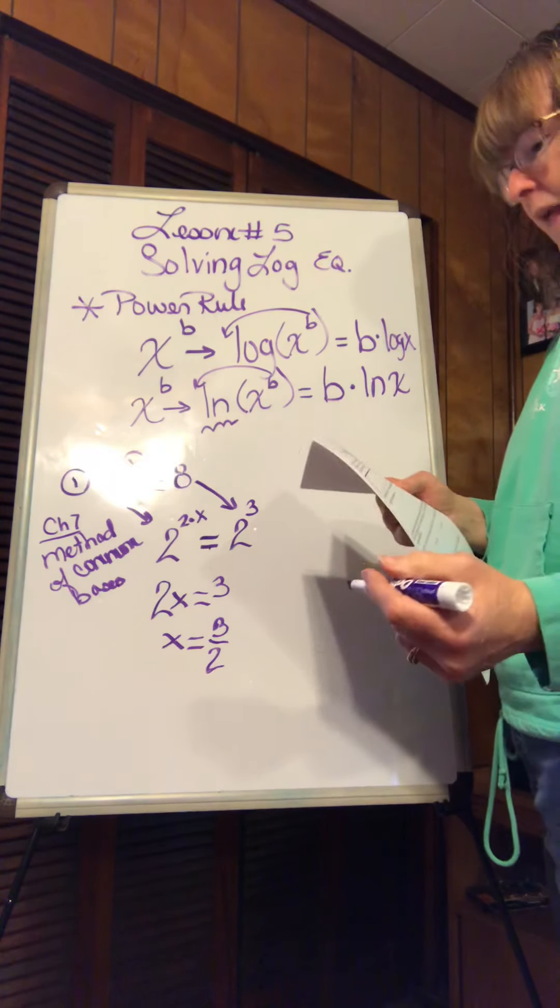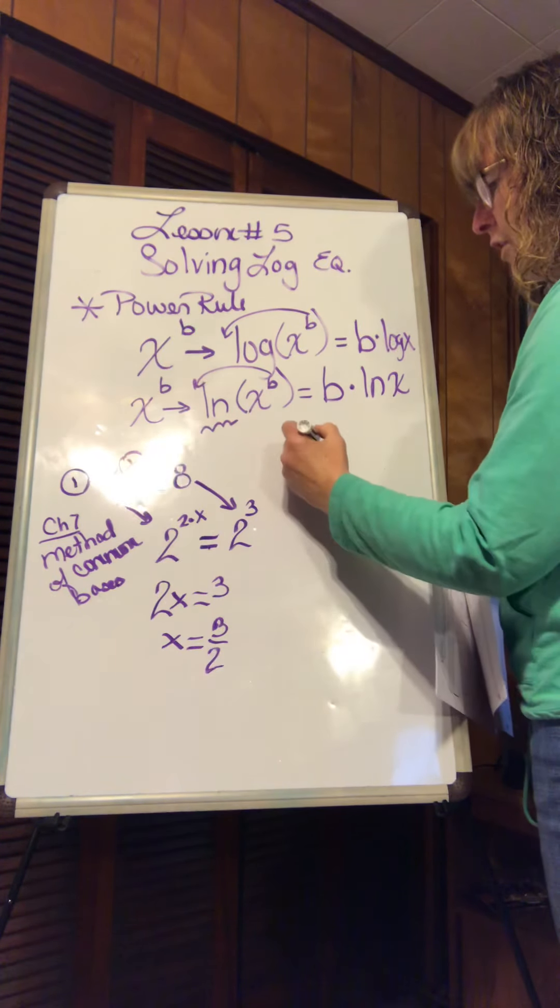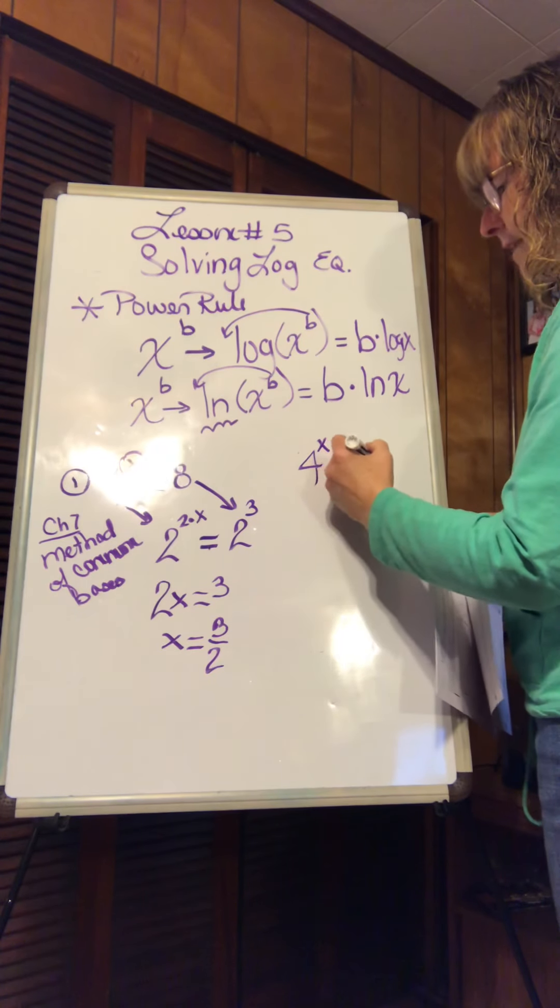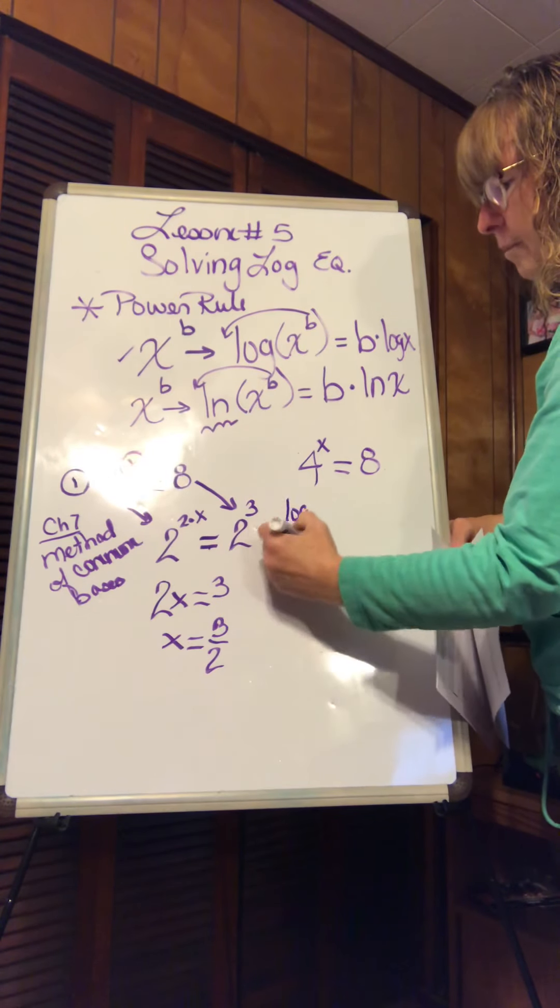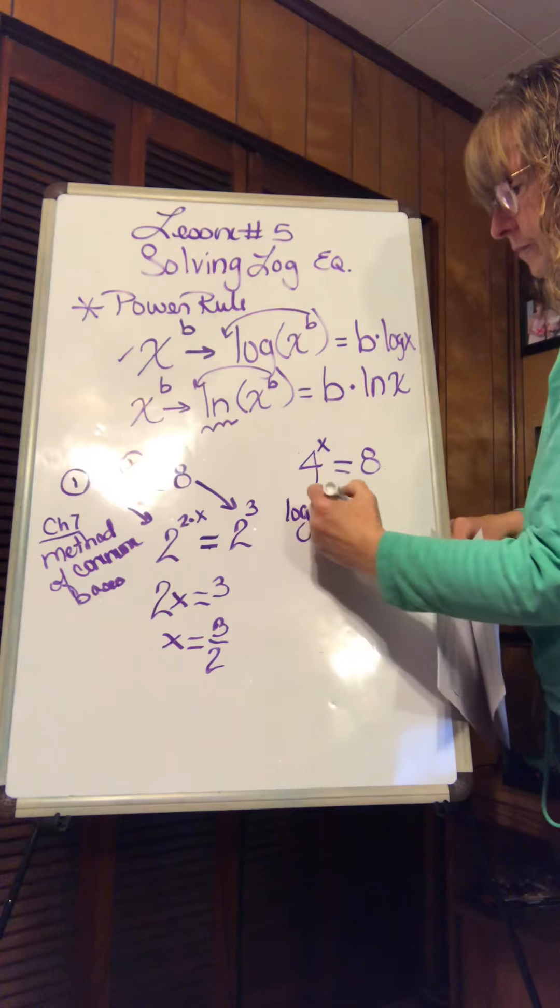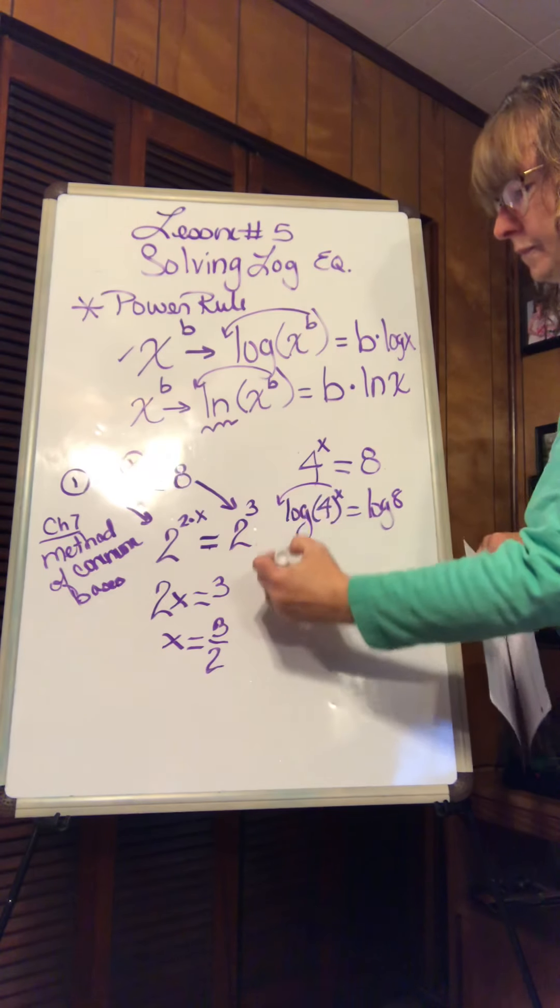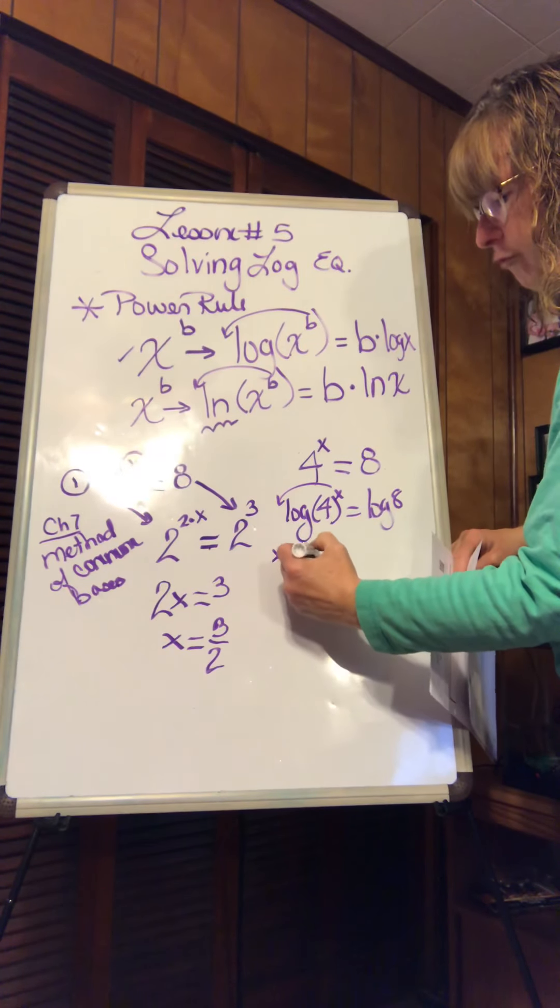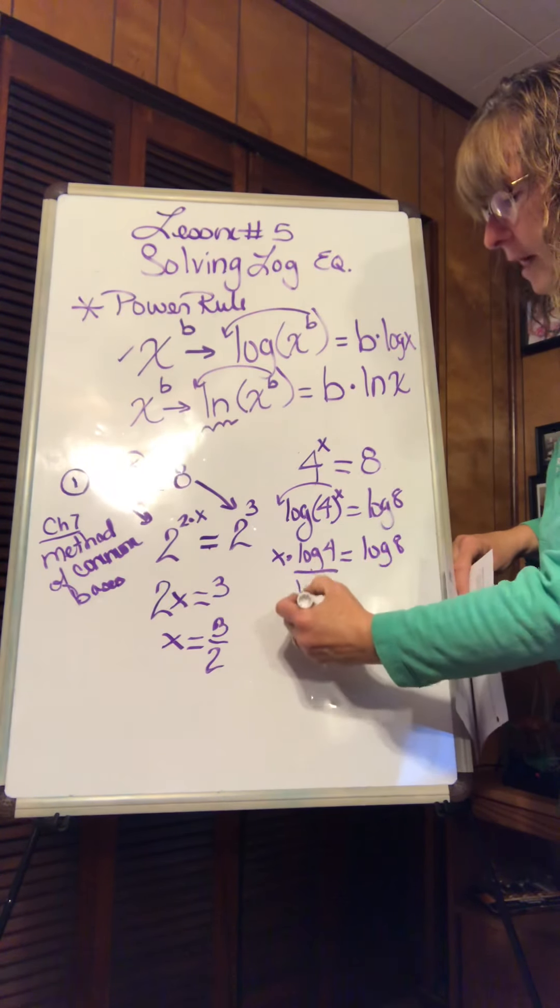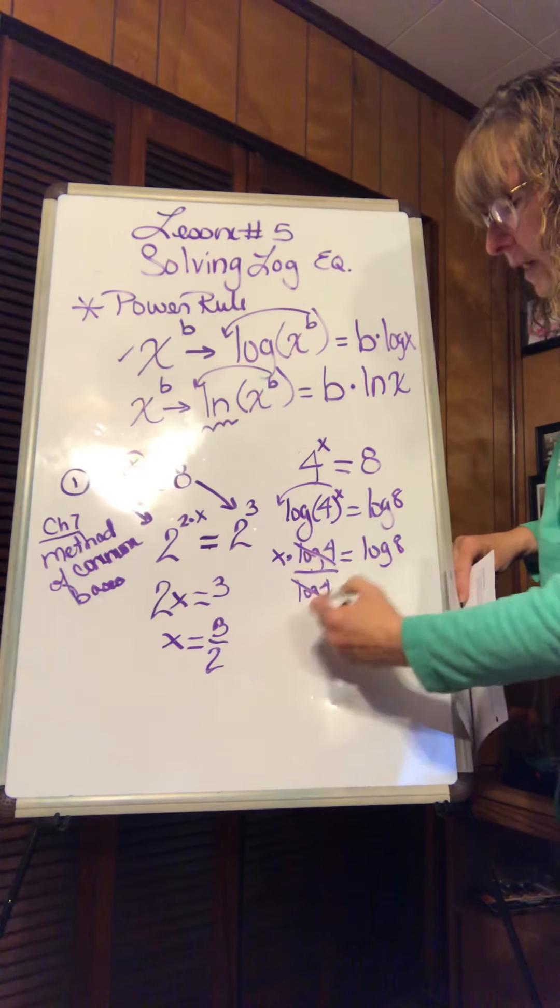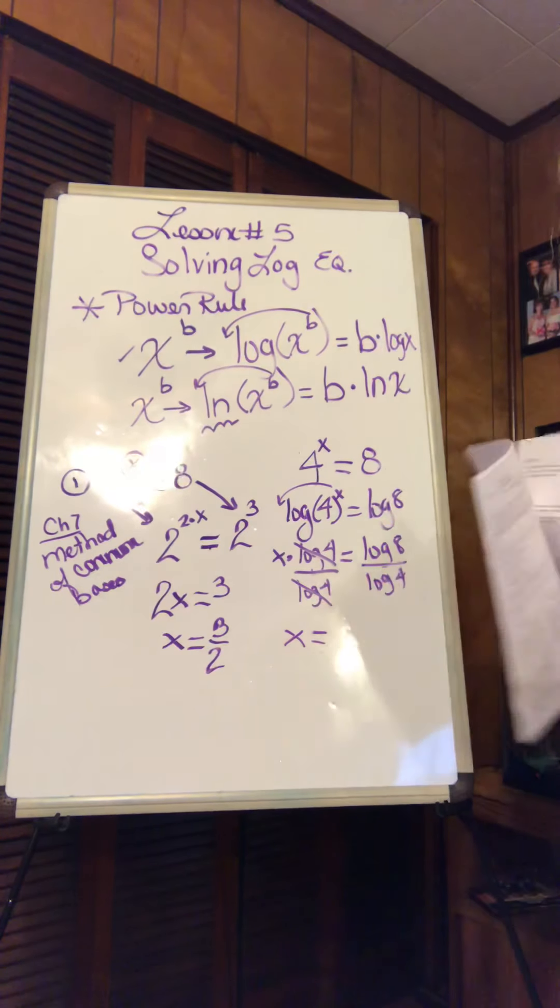This is chapter 7 method. Now let's take this exact same problem and use a log. They say in the directions common log, so I'll use this guy up here. If I put a common log on both sides, power rule, I now have x times the log of 4 is now equal to the log of 8. If I divide by the log of 4, because now I'm solving, I want x by himself.